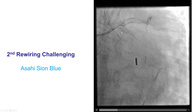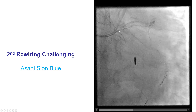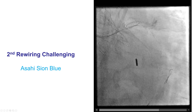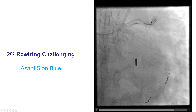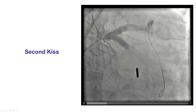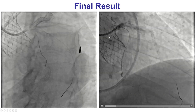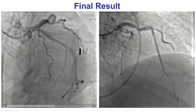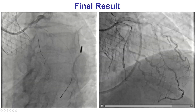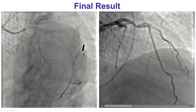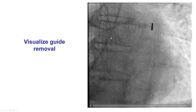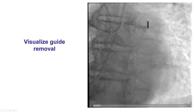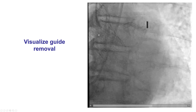We did have some difficulty rewiring into the LAD. This is the second rewiring, so we want to go from a distal strut. Eventually, after some attempts, we were able to advance a Workhorse Blue wire into the LAD. We performed the second kissing balloon inflation with good expansion of the balloons and a nice final result, both angiographically and by intravascular ultrasound. We had to remove the guide extension used earlier in order to perform kissing balloon inflations, since we could not fit two balloons through a 6 French guide catheter extension. A nice result was achieved, and then we removed the guide catheter under fluoroscopy to make sure we did not have any issues with entrapment.